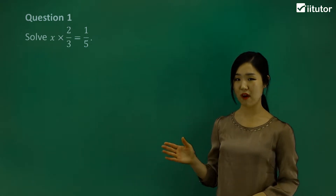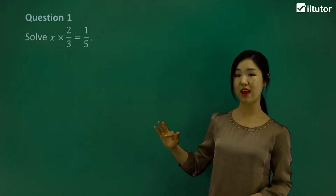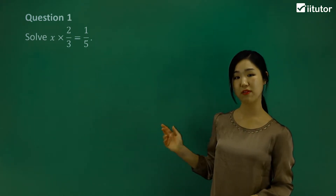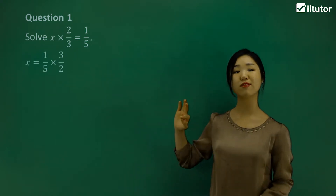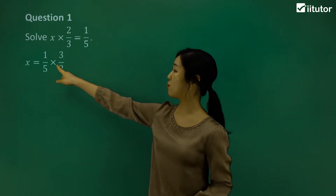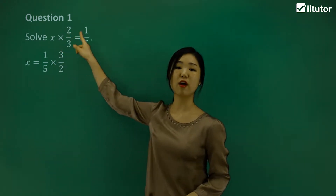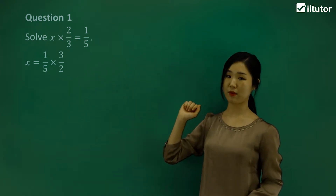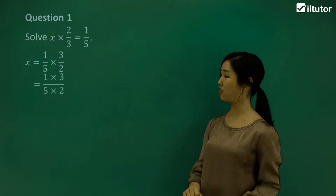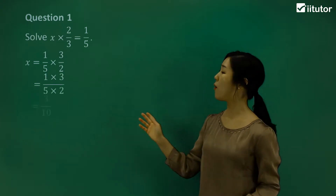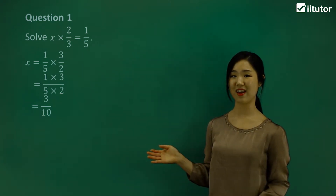Remember, when we're dividing by a fraction like 2 over 3, we have to change it to a multiplication sign and flip the 2 over 3 — flip the second fraction around. So the 2 over 3 simply becomes 3 over 2; we reciprocated it. Now, multiplying the fractions, we multiply the numerators together and the denominators together. 1 times 3 is 3, 5 times 2 is 10, so 3 over 10 is our final answer — that is x.